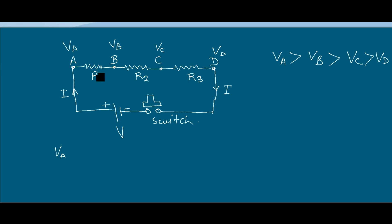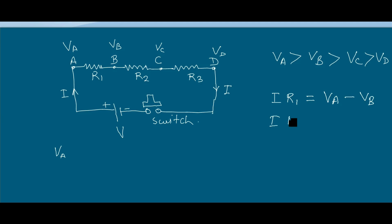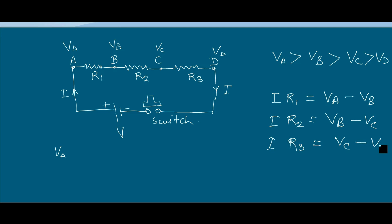The potential drop across resistor R1 can be written as I × R1 = VA − VB. Similarly, the potential drop across R2 is I × R2 = VB − VC, and the potential drop across R3 is I × R3 = VC − VD. Let the potential drops across R1, R2, and R3 be called V1, V2, and V3 respectively.